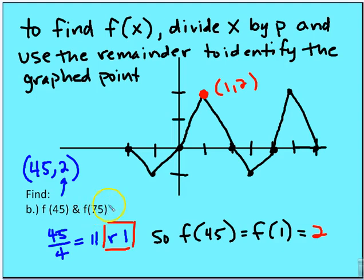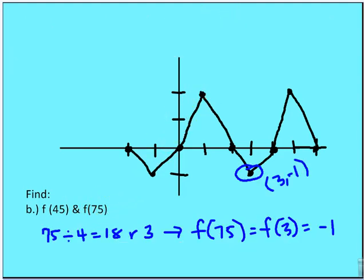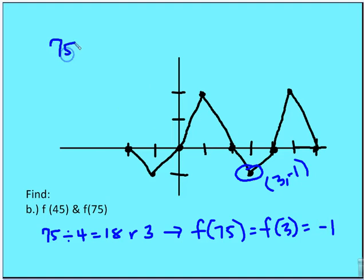For f of 75, divide 75 by 4: that gives 18 with a remainder of 3. At x equals 3 on the graph, the y value is negative 1. So f of 75 equals negative 1, and the coordinate is (75, negative 1).